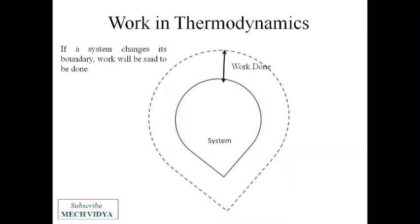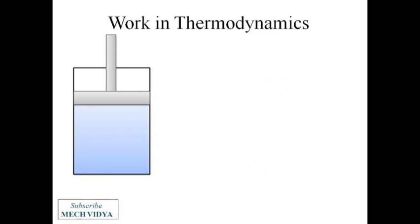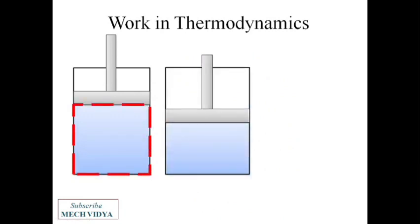Suppose we have a piston-cylinder arrangement. This is the volume of the system. Now if I apply a force on the piston, the piston moves downward, thereby compressing the system. Thus the system boundary changes, so we can say that work has been done on the system.